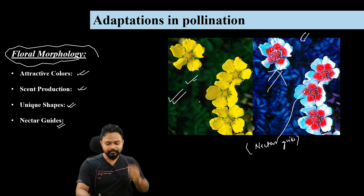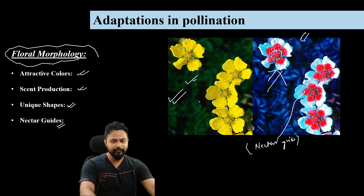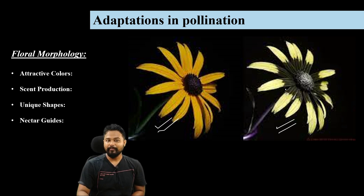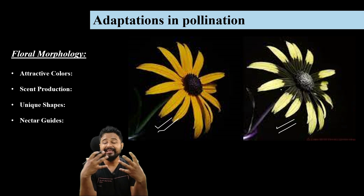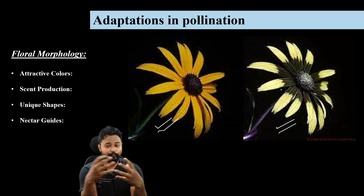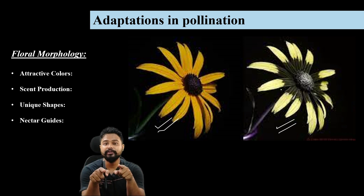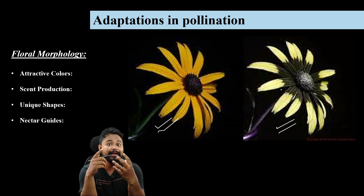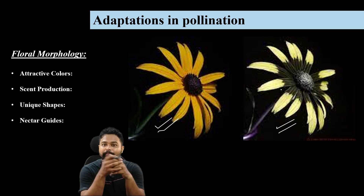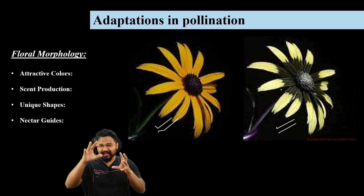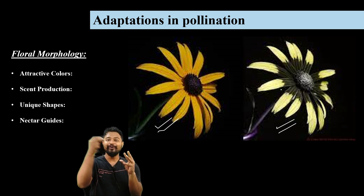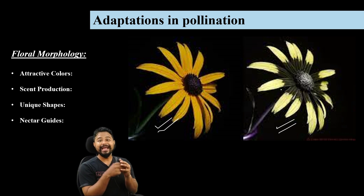Brightly colored flowers attract pollinators. If you have the right flower color, it will attract pollinators — the beetles and the night moth. Flower color is a key adaptation to draw in the appropriate pollinator.